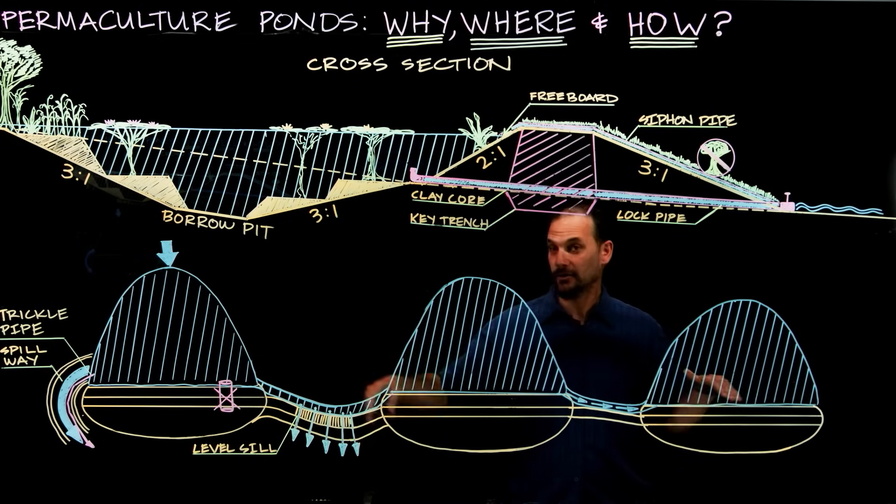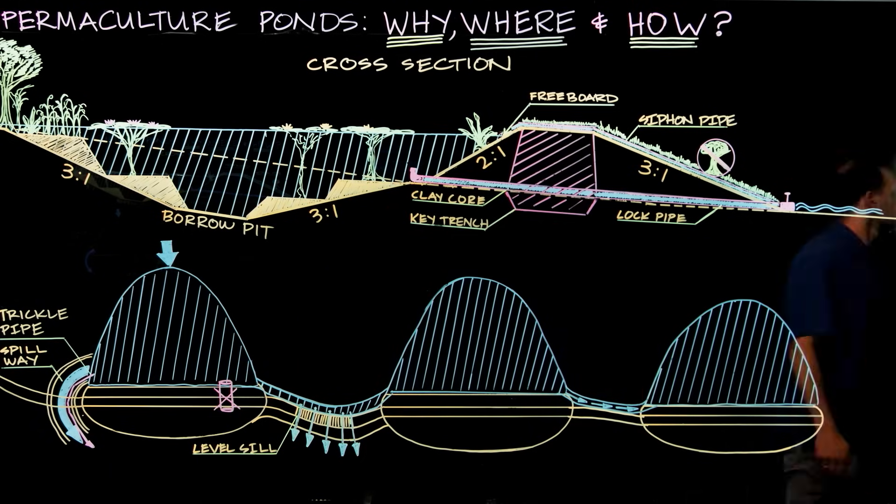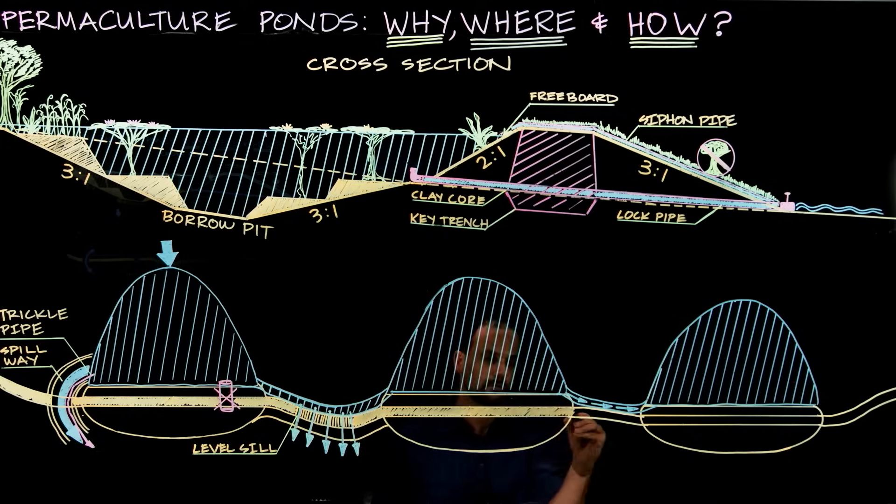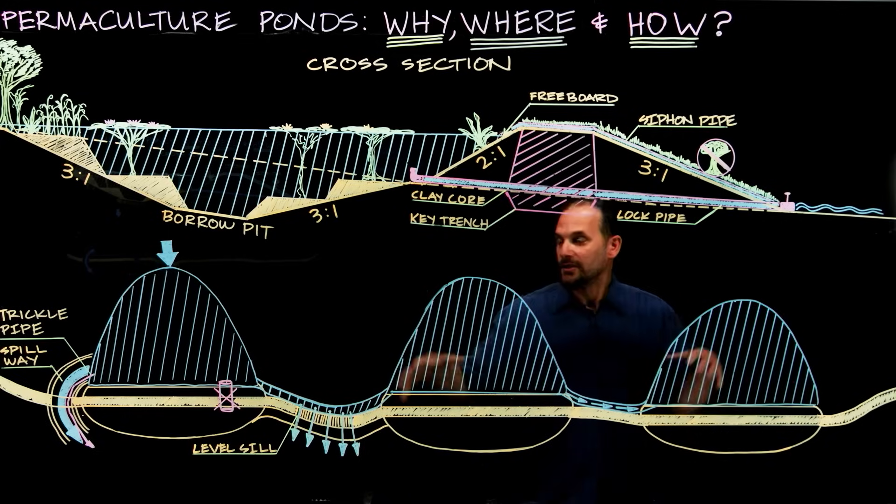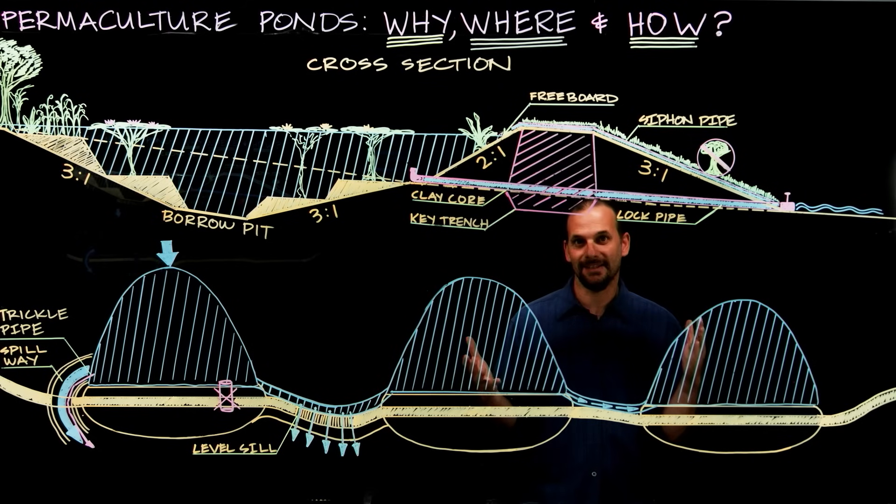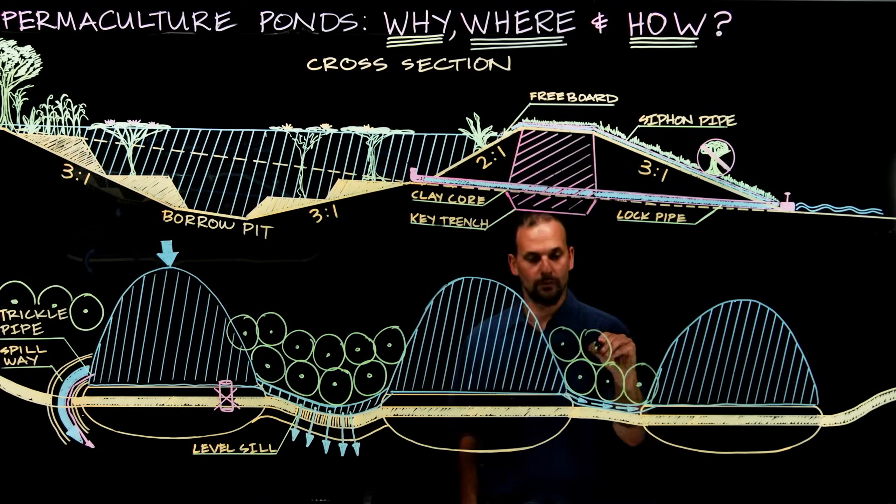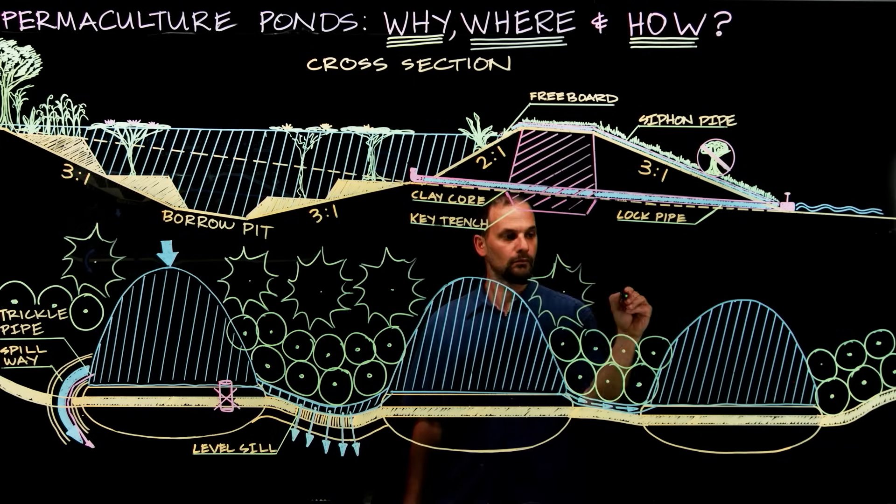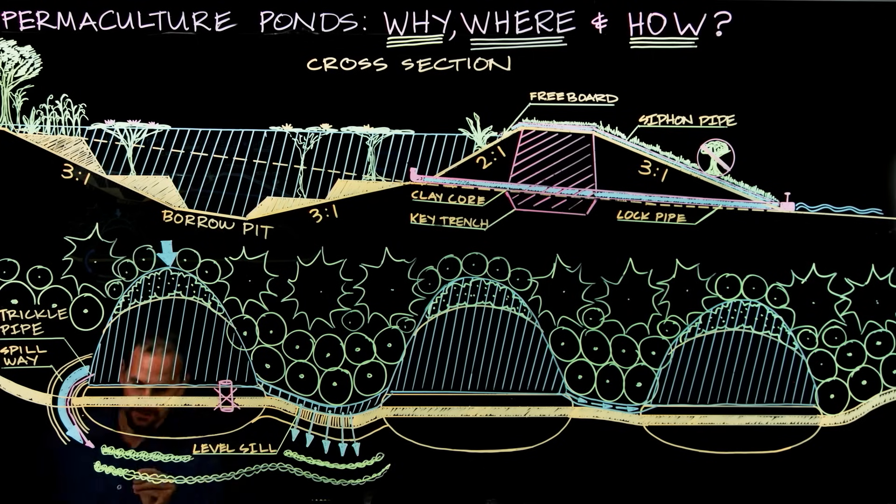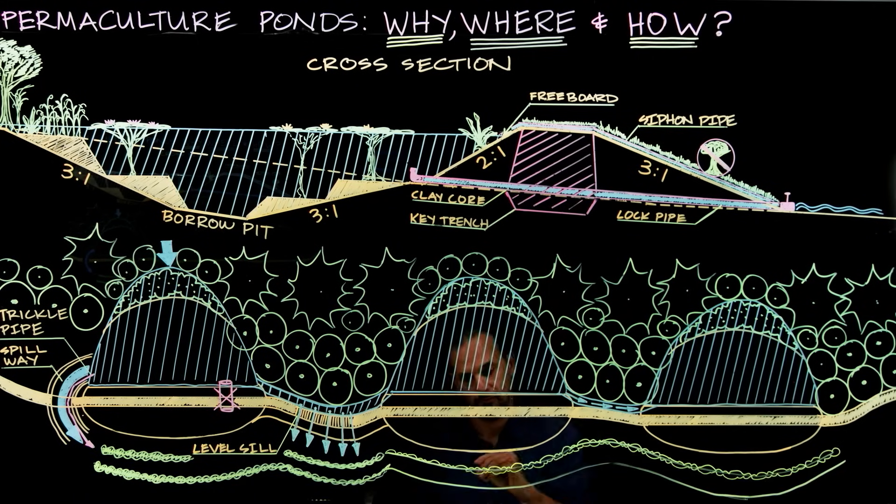And their embankments here—the tops of the dams—can actually function as a road, and a roadway can connect all these three ponds. So these water structures become the bones of the system, and then the vegetation layer is overlaid on top of this mainframe structure of roadways and water collection.